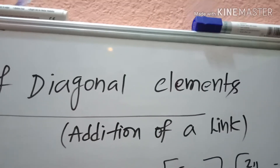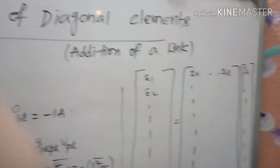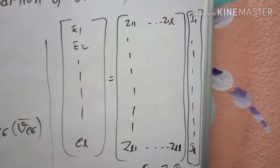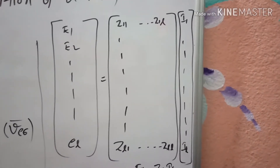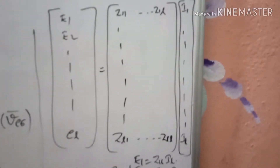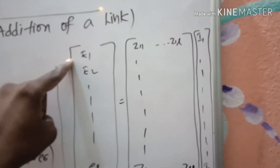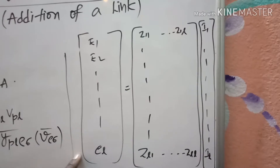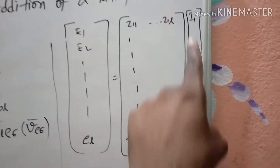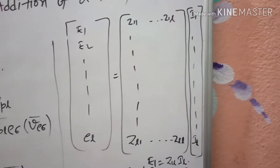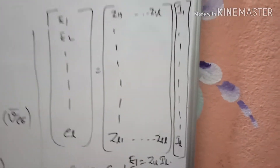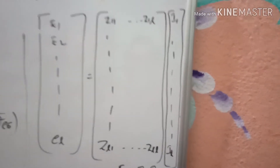Now what we are going to find is the diagonal elements. In order to find the diagonal elements, what we need to do can be observed from the performance equation of the matrices. In the left side you have all the voltages, this is the impedance matrix, and this is the column vector of currents. From this, if I want to know the Z_ll value...